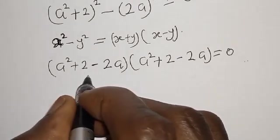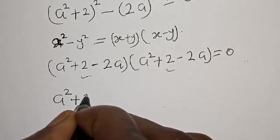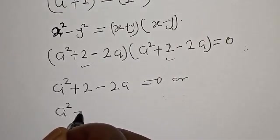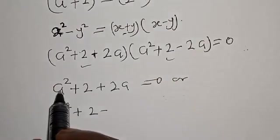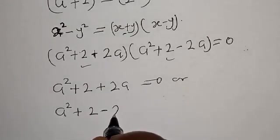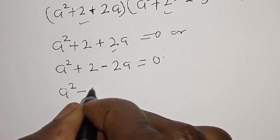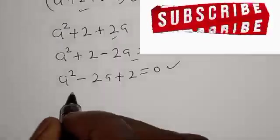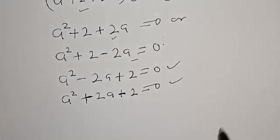Then we have two cases. The first case: a squared plus 2 minus 2a equals 0, which rearranges to a squared minus 2a plus 2 is equal to 0. This is a quadratic equation. The second case: a squared plus 2 plus 2a is equal to 0, which gives a squared plus 2a plus 2 is equal to 0. This is also a quadratic equation. We now have two cases.